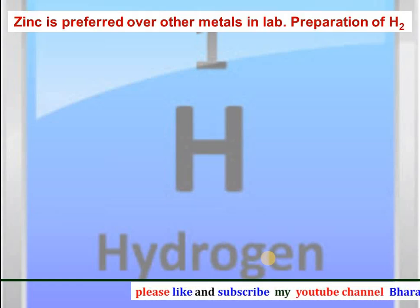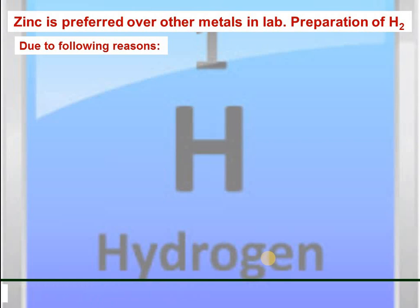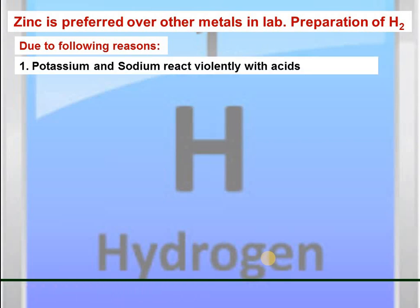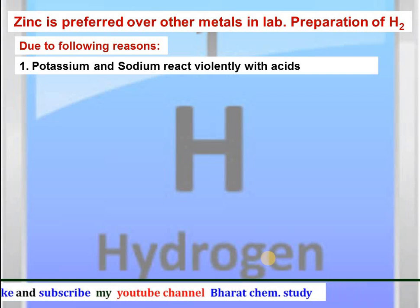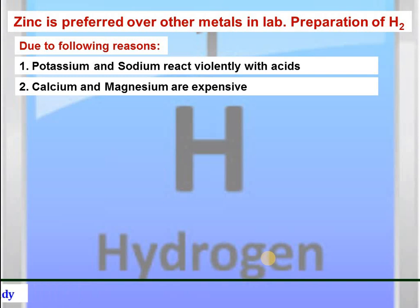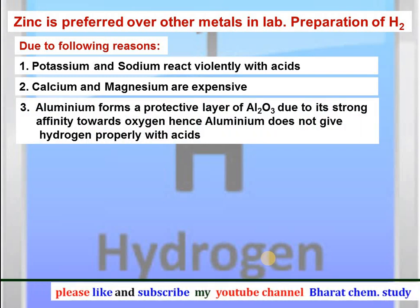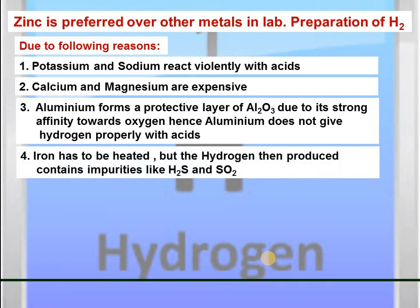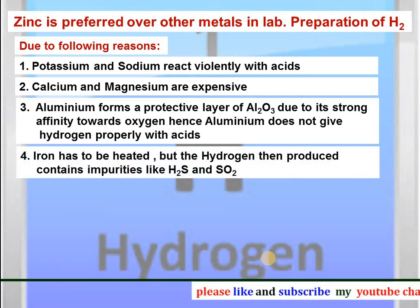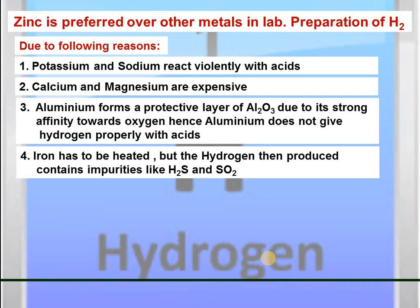Zinc is preferred over other metals in the lab preparation of hydrogen for the following reasons. First, potassium and sodium react violently with acids and sometimes they explode, so they are not used. Calcium and magnesium are not used because they are expensive. Aluminium forms a protective layer of aluminium oxide due to its strong affinity towards oxygen, so aluminium does not give hydrogen properly with acids. Iron has to be heated to produce hydrogen gas, but the hydrogen gas formed contains impurities like H2O and SO2, so it is not used.